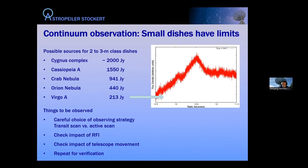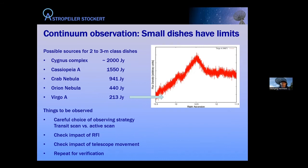Estimates from the radiometer equation give only a theoretical limit — there are more practical factors. You need to verify carefully that sources are actually accessible. And this brings me back to my original statement: hydrogen is number one. It's so much easier to do than continuum observations. I sometimes see people starting with continuum, and that's harder.